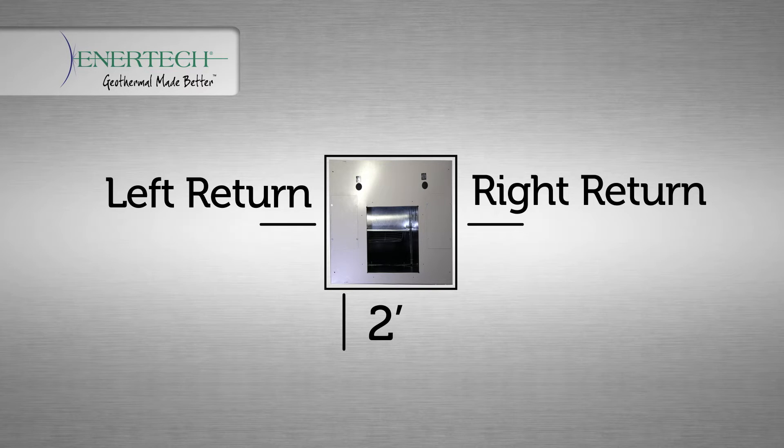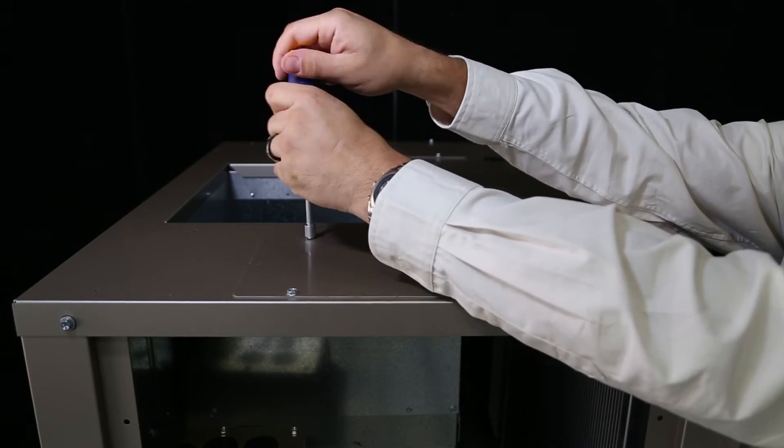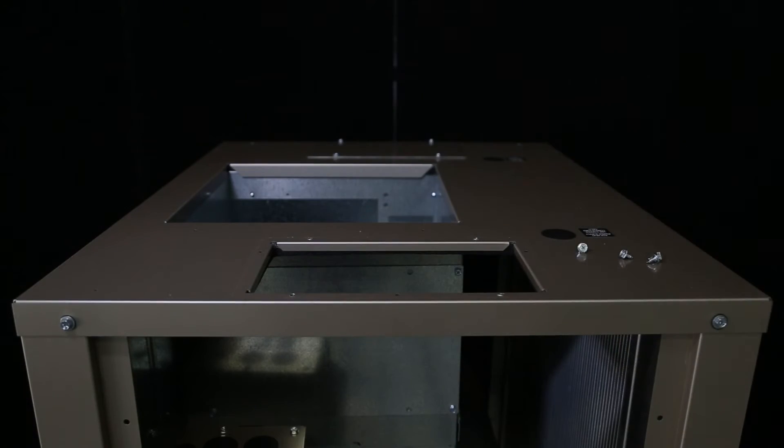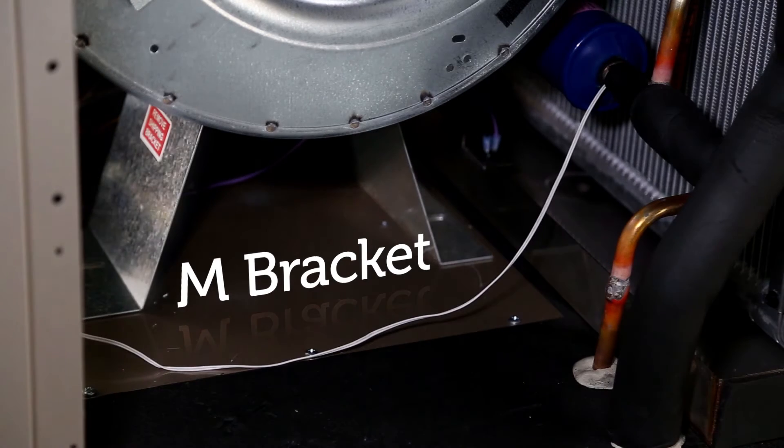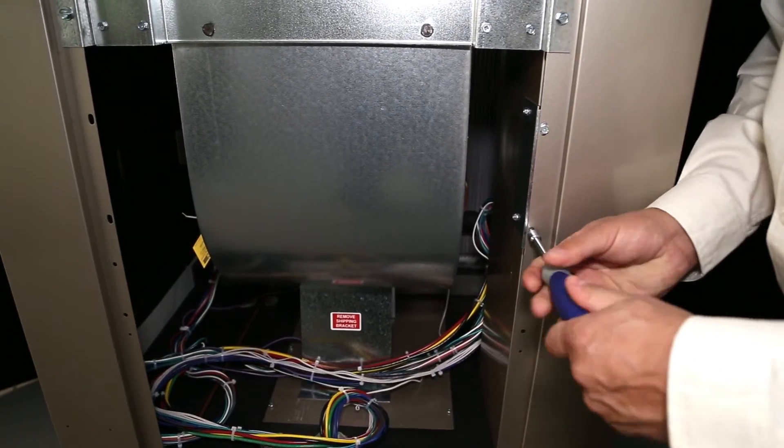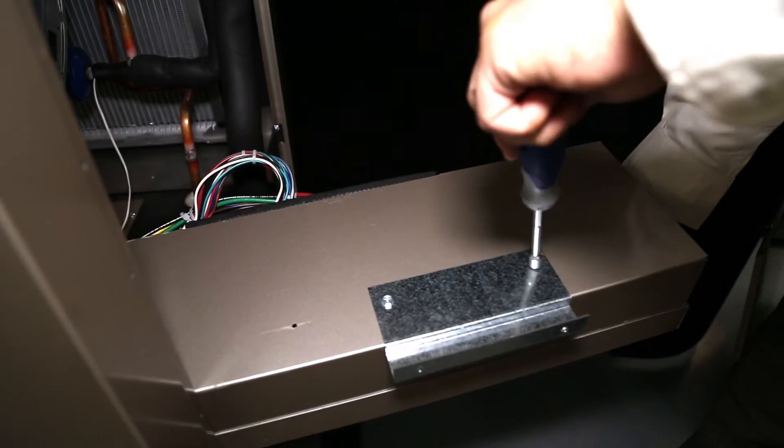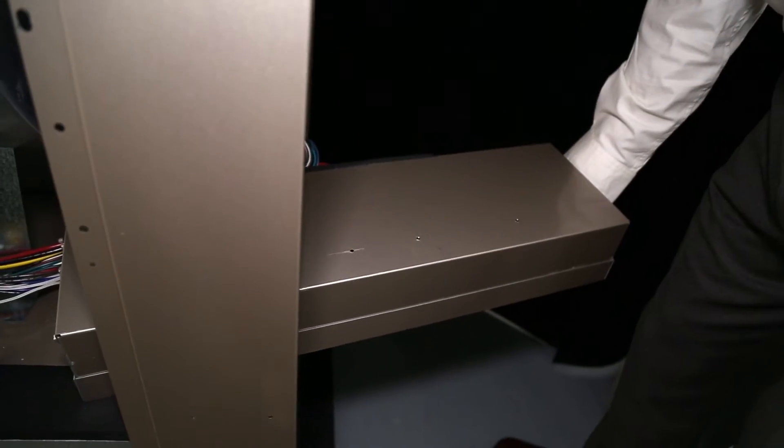Once you have determined whether the unit will be left or right return, we'll install the control box. Mounting the control box requires removal of the top access cover port filler plate in front or back, several panels and the M bracket under the blower housing. Make sure to keep the four screws for future use. Remove the control box shipping bracket from the unit and the control box. This requires the removal of four screws. Remove the bracket from the unit. It can be recycled.